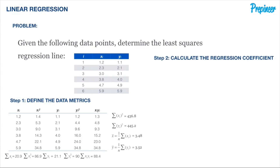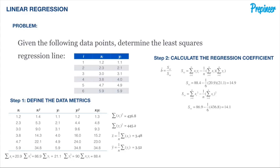Our next step is to take these new metrics and start defining various characteristics of our line, starting with the regression coefficient, or the slope of the line. The general formula is the sum of the XY products divided by the sum of squares of X. These values can be found using the standard formulas in the NCES reference handbook. Combining them all together, we get a regression coefficient of 1.06.